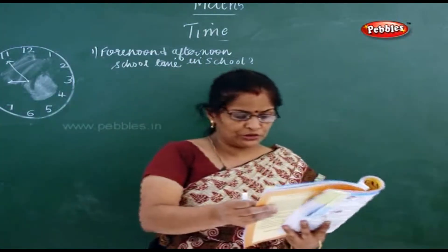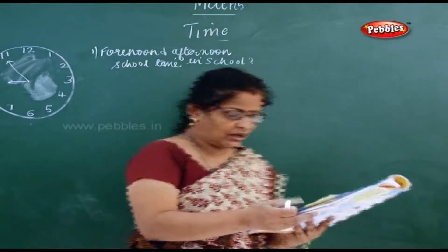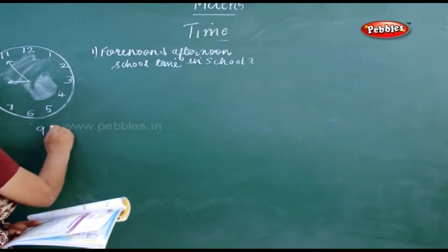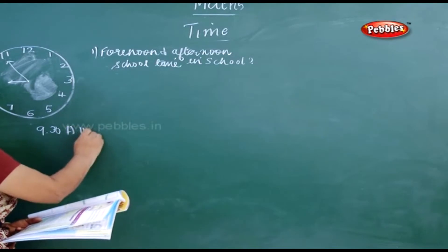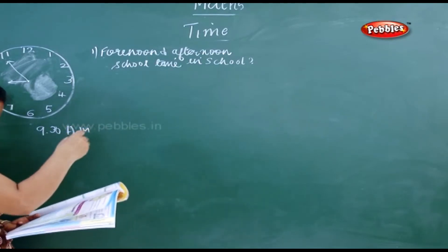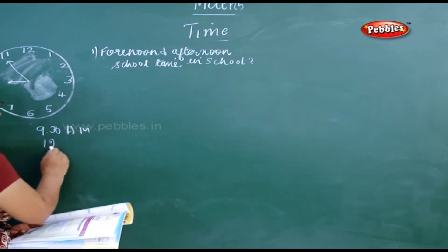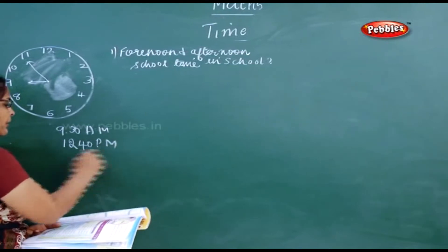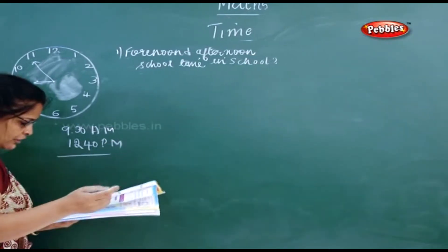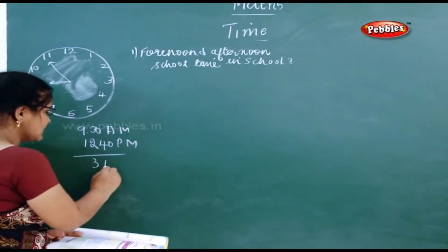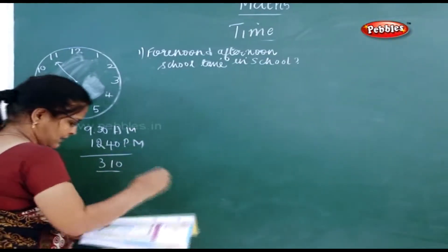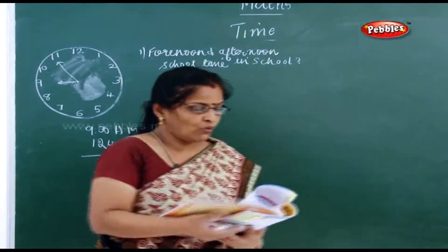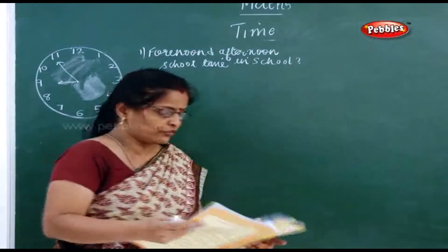Forenoon school time is 9:30 AM to 12:40 PM. That means the duration is 3 hours and 10 minutes. Is it clear? 3 hours and 10 minutes. Now what do you have to write?